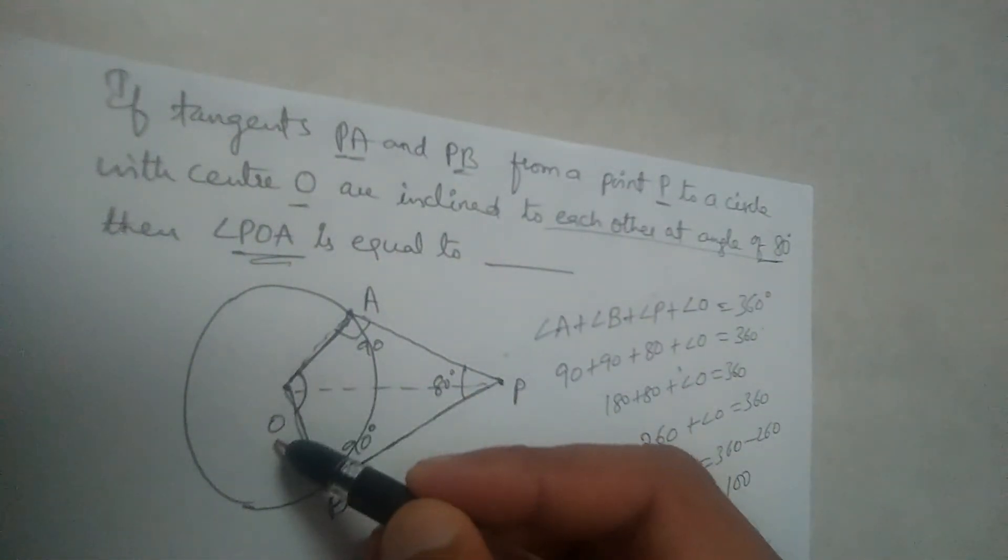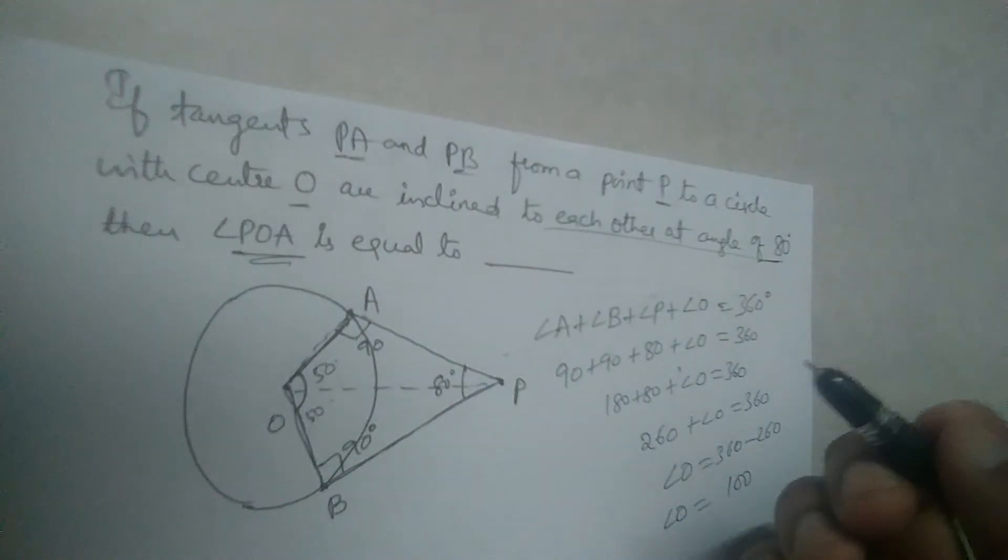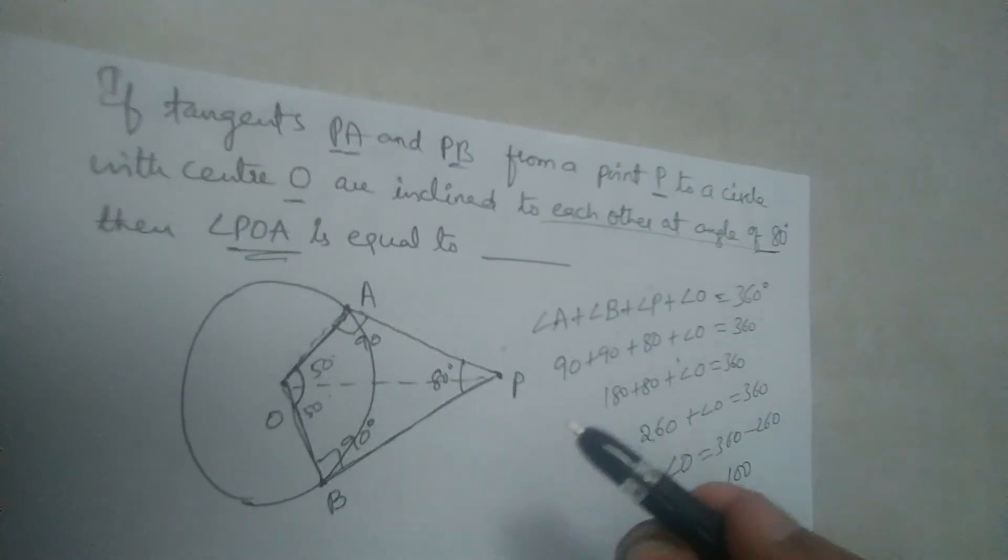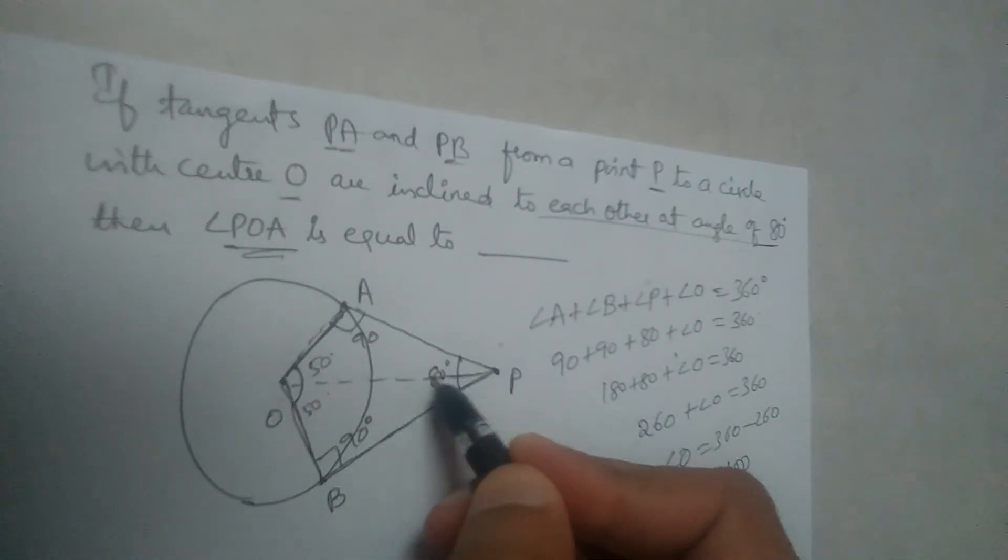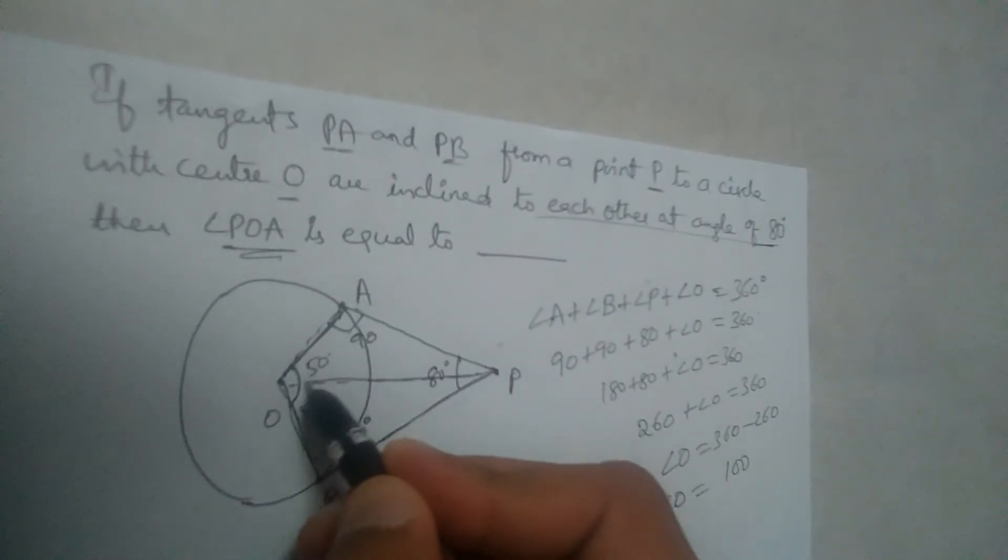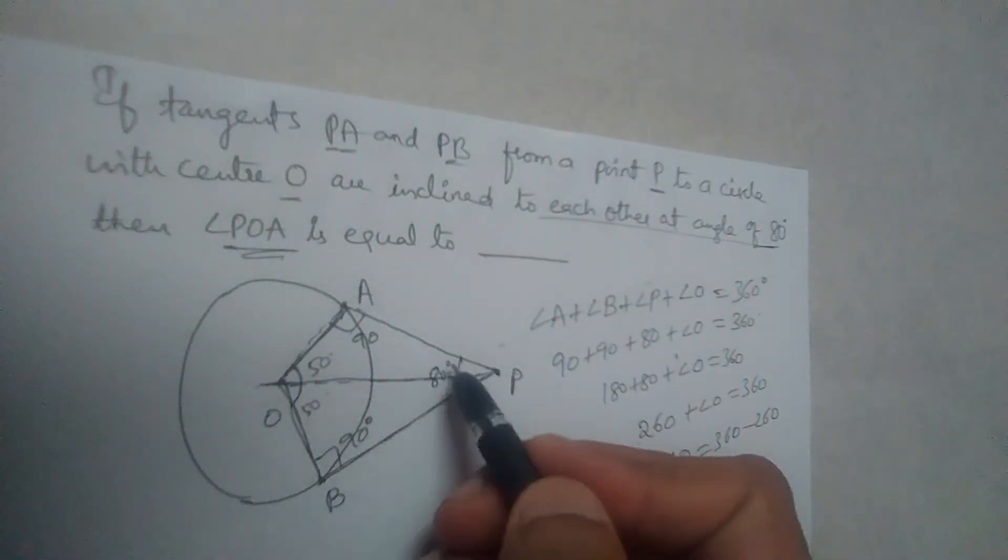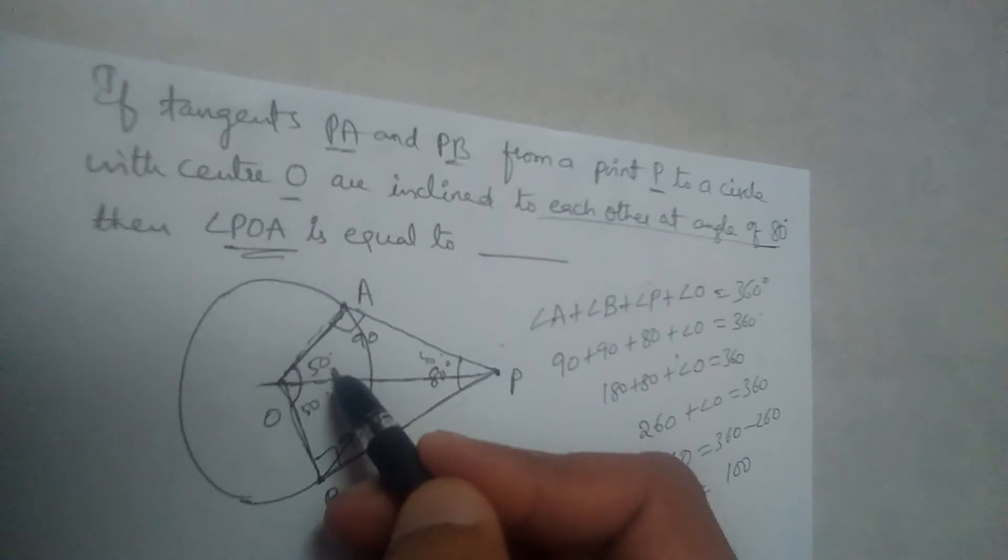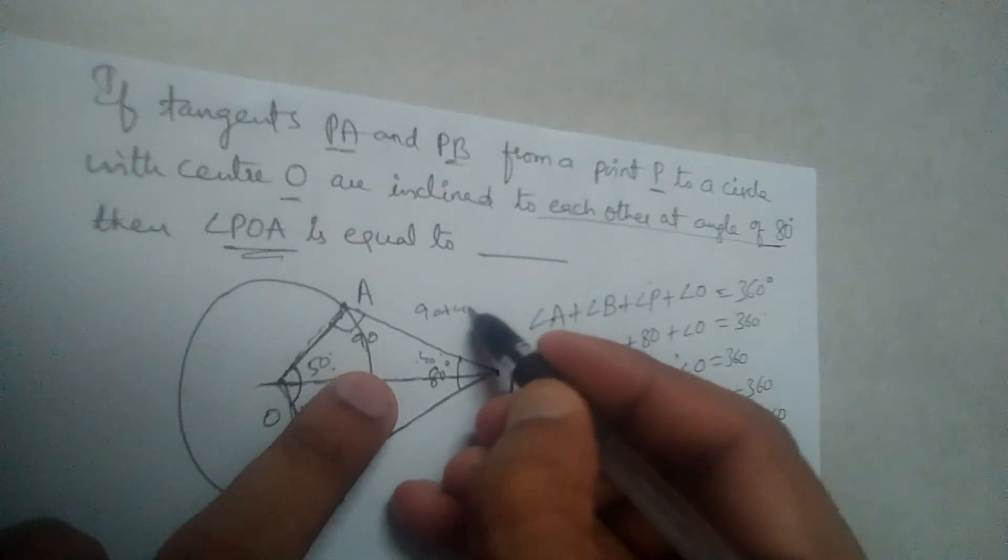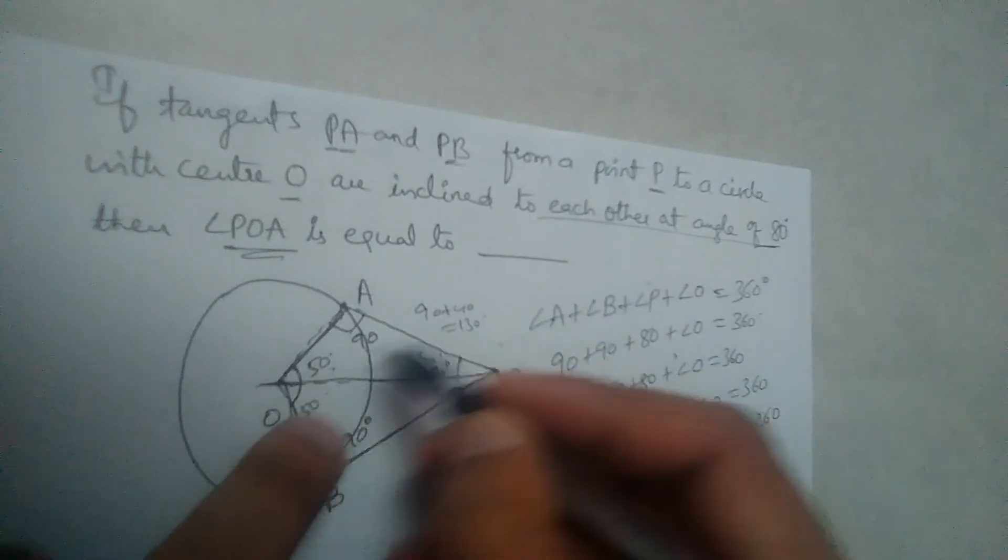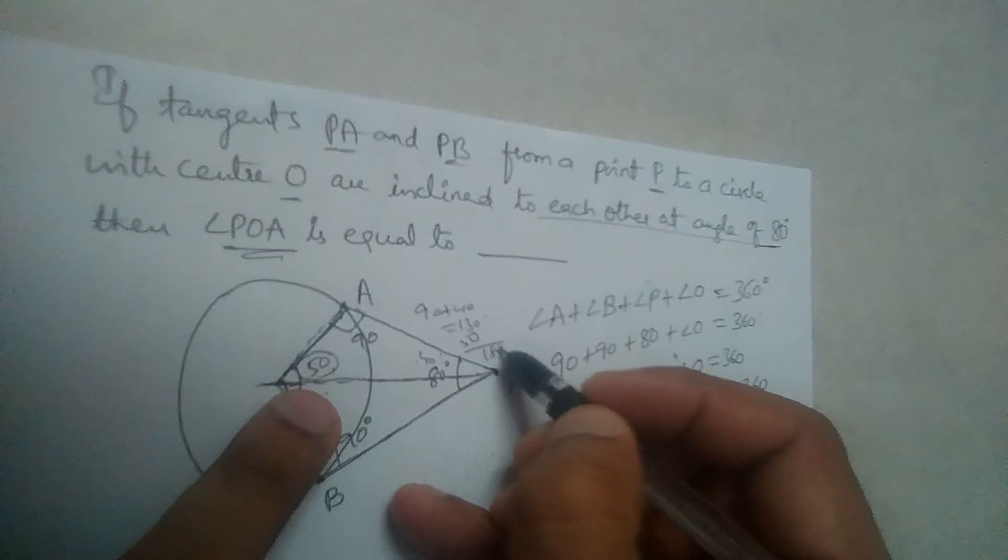This complete angle O is 100. So POA will be 50, half. Because in one of the statements in one of the previous problems we have studied that the angular bisector of this will pass through the center of the circle. So this will be 40 degrees. This will be 50 degrees. Because 90 plus 40 will give us 130 degrees. So this should be 50 to make it 180.